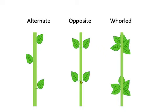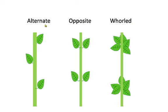In the opposite arrangement, leaves are in opposite directions, and that is why the name is 'opposite.' In the third type of arrangement — the whorled arrangement — from one node so many leaves come out. So there are three types of arrangement of leaves: alternate, opposite, and whorled.